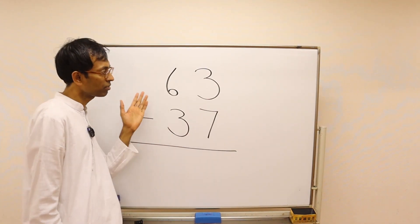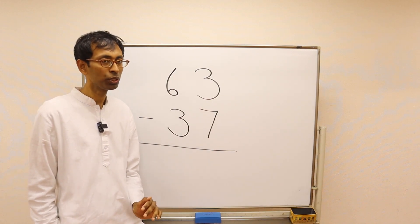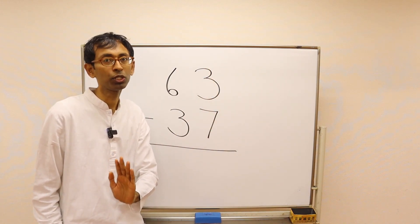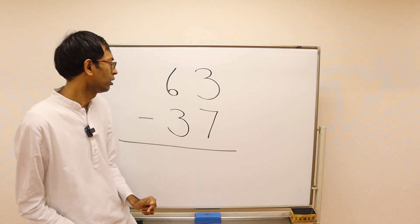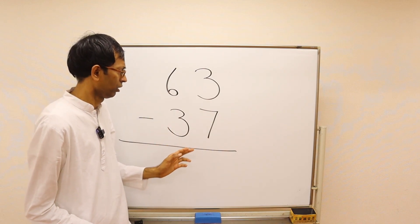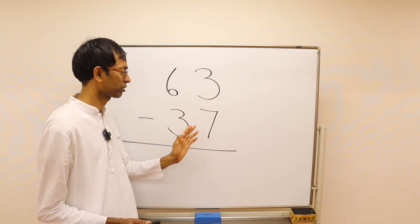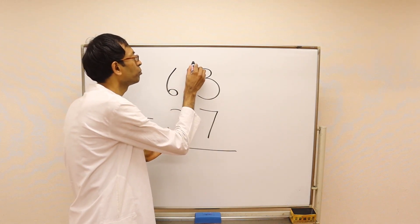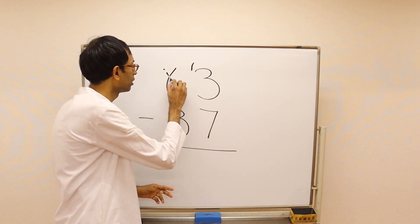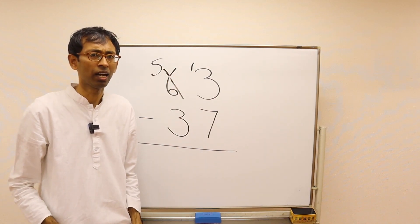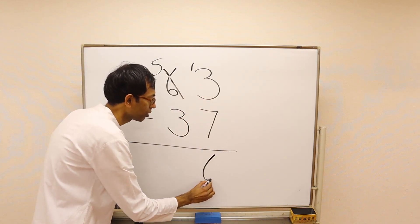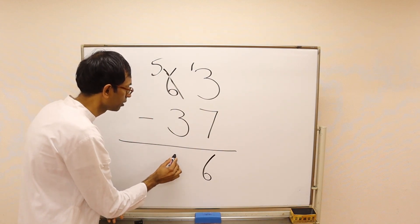We'll see if that's really true. Suppose you have a problem: 63 minus 37. How do we do this usually? We start from the right — that's our usual way. We try to do 3 minus 7, but 7 is bigger than 3, so we can't subtract. We borrow 1 from 6, making it 13. The 6 becomes a 5, and 13 minus 7 is 6. Then 5 minus 3 is 2.